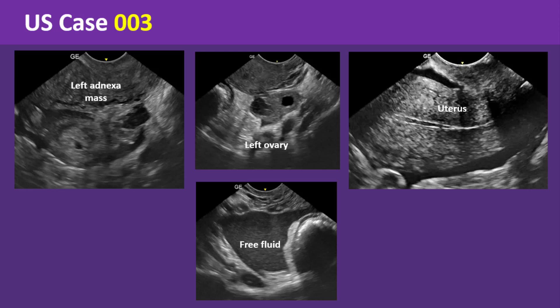The uterus is average in size and showing minimal endometrial fluid collection. There is no definite intrauterine gestational sac. The right ovary is seen and is average in size.